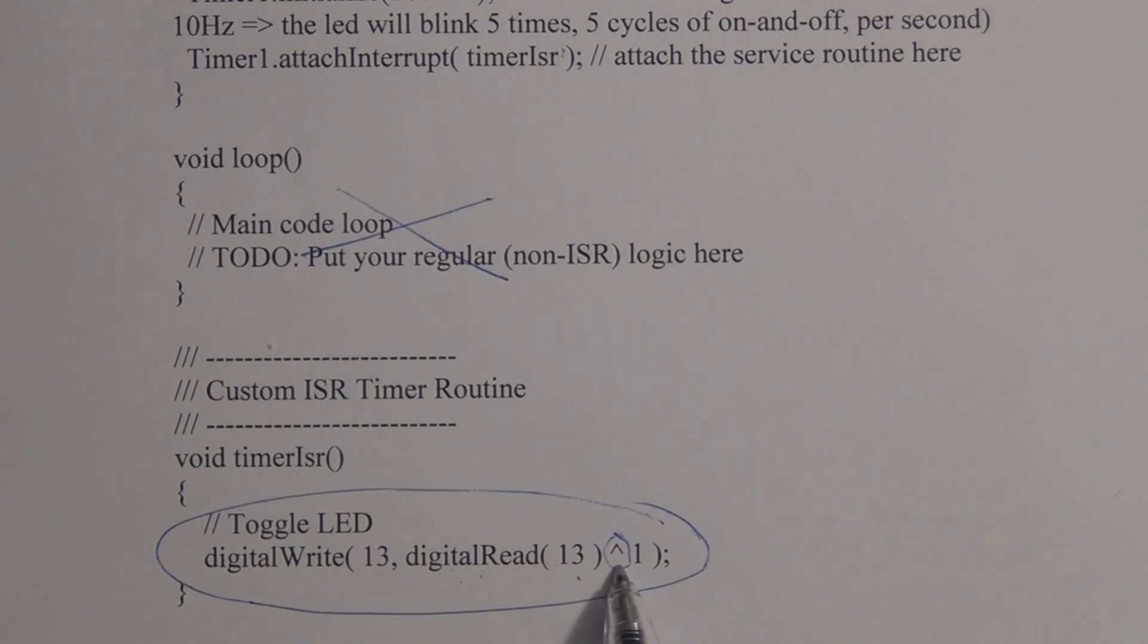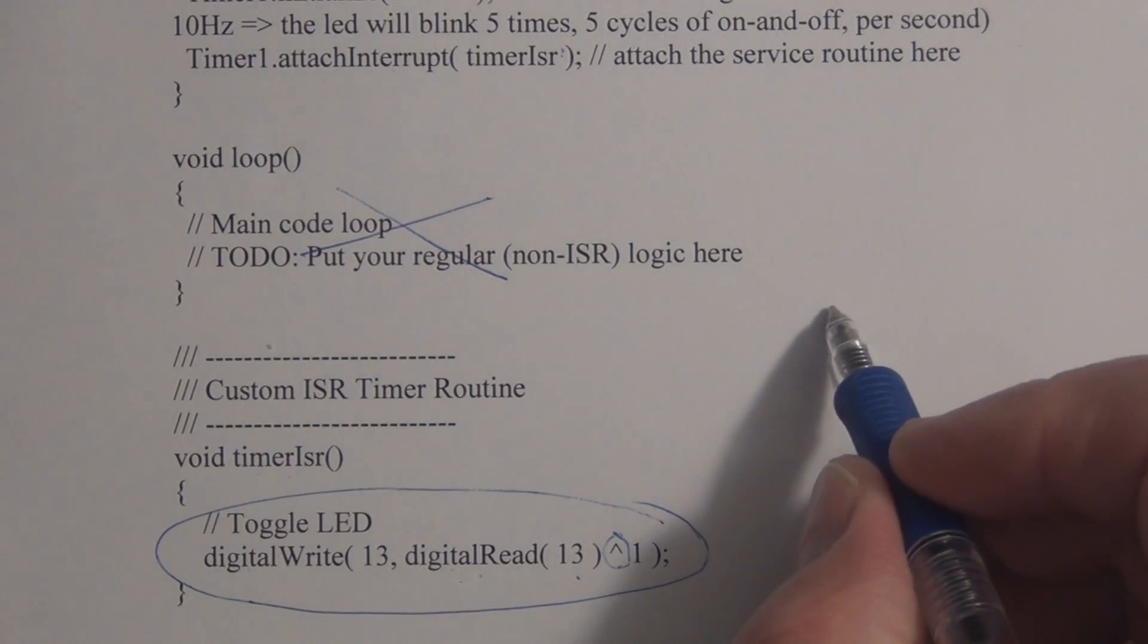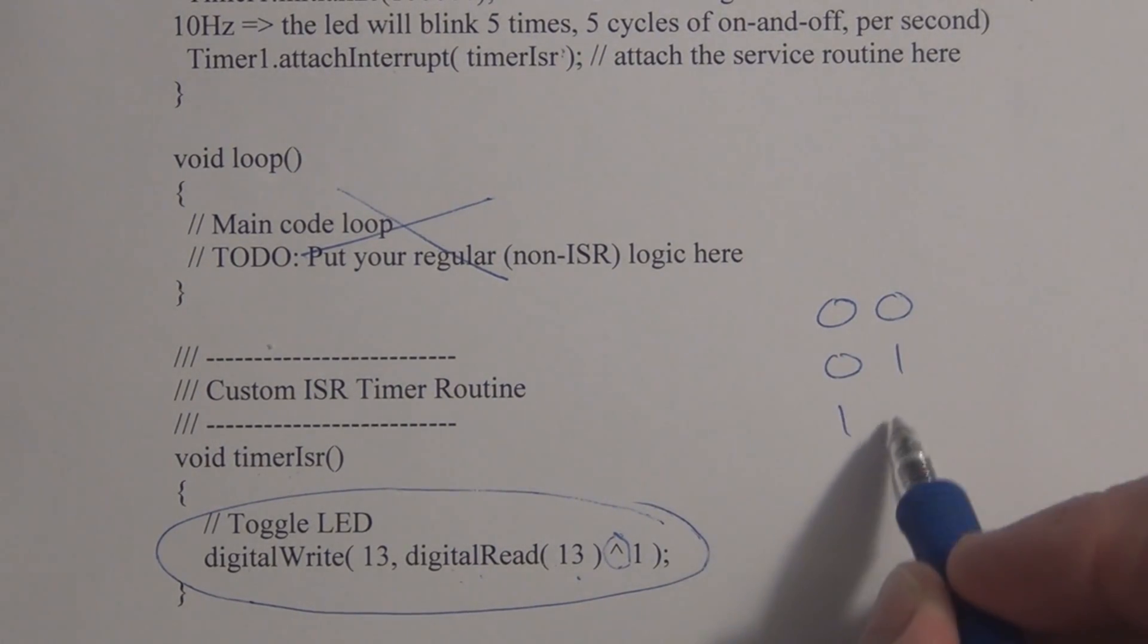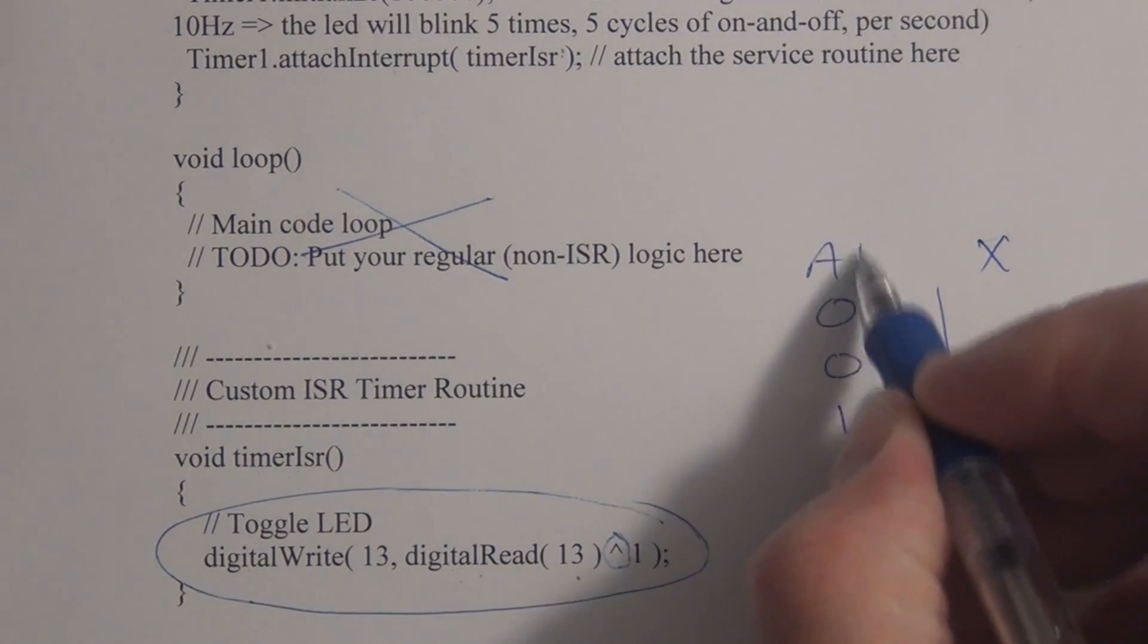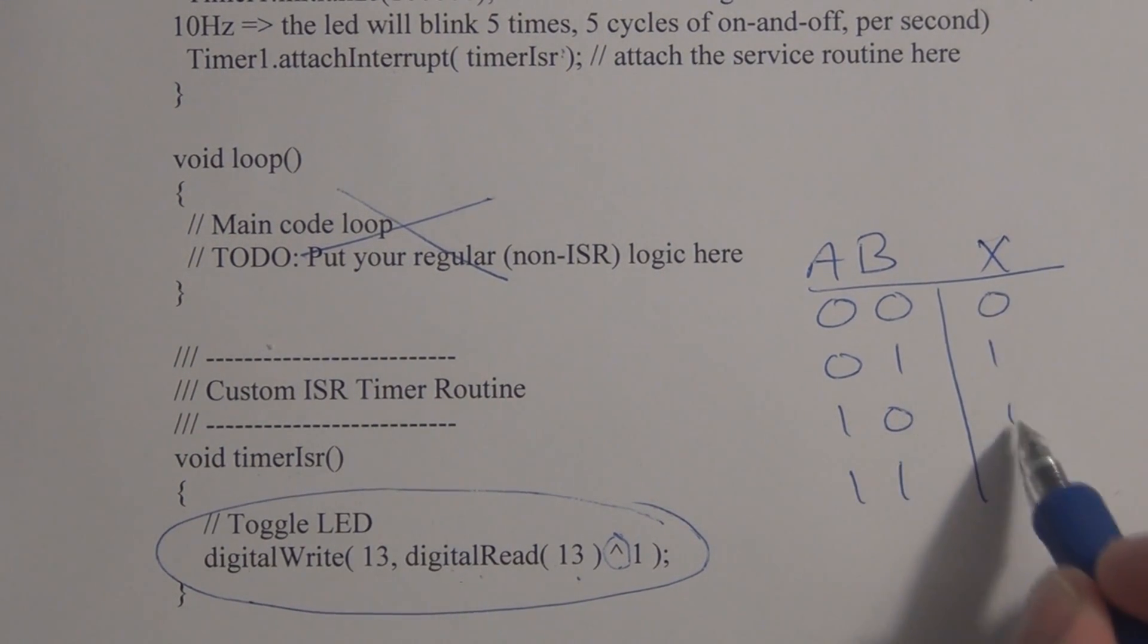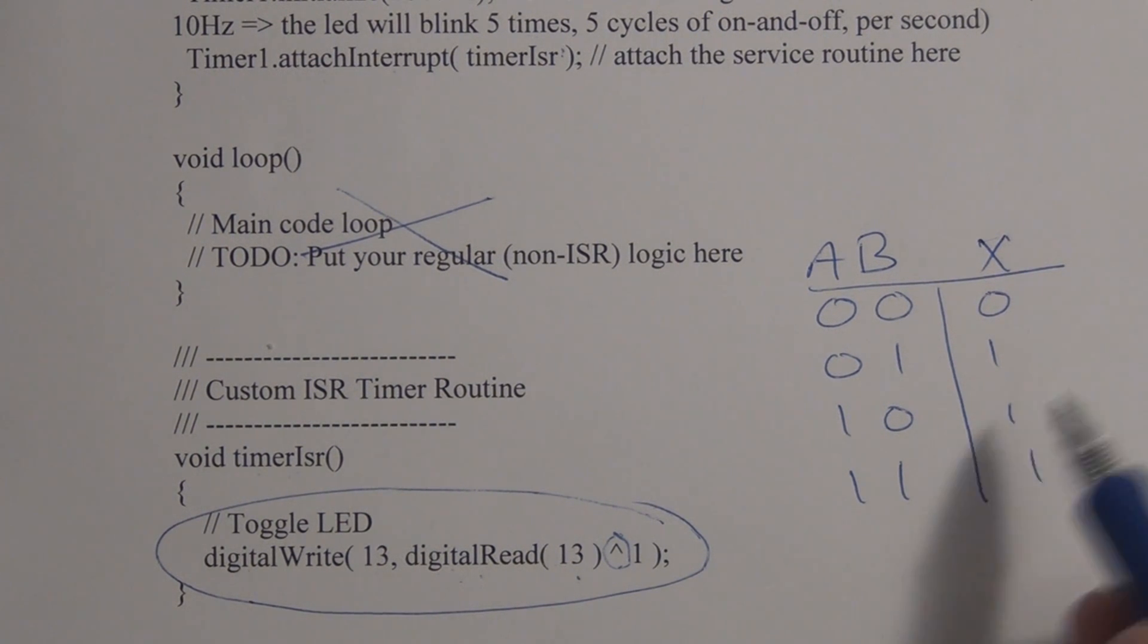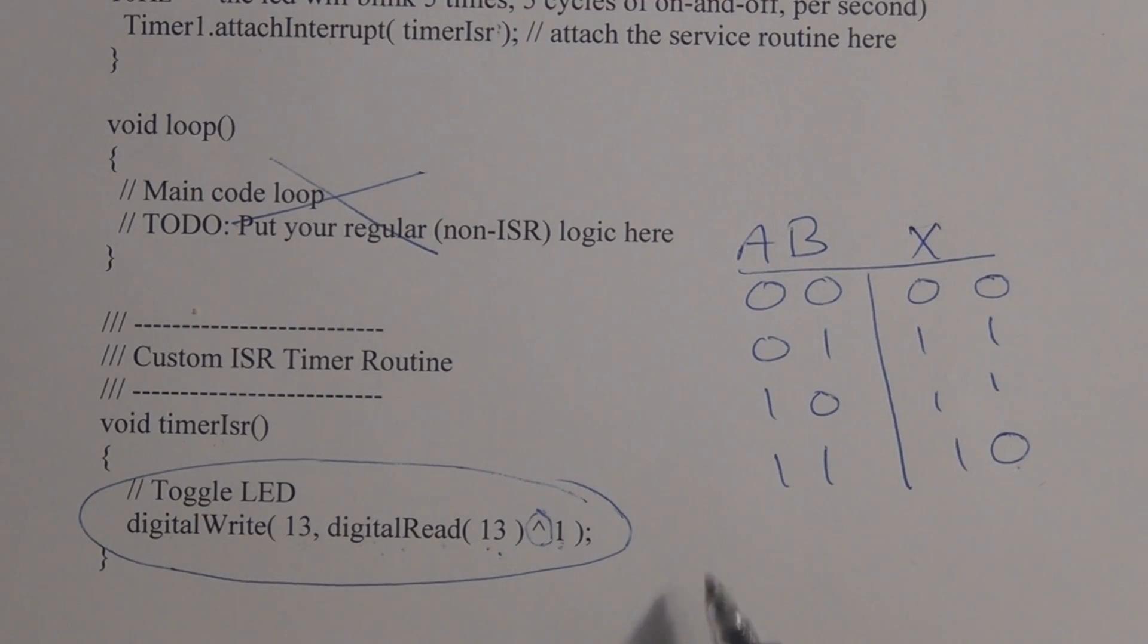If you recall, an OR gate: 0,0 is 0; 0,1 is 1; 1,0 is 1; 1,1 is 1. An OR gate, we have A, B, is high when either of the inputs is high, so 0,1,1,1,1. Well, an exclusive OR gate produces a high output only when both inputs are opposite each other, so it's 0,1,1,1,0.